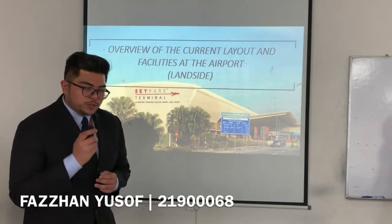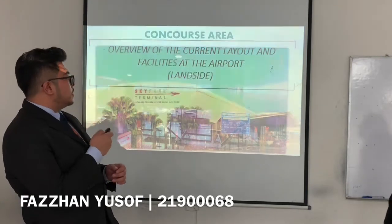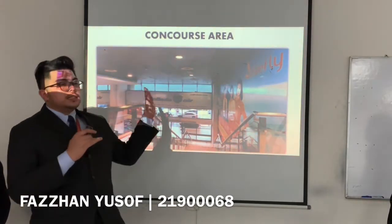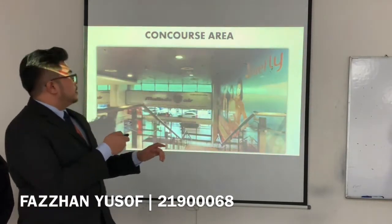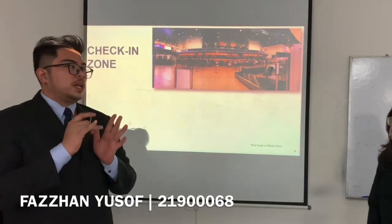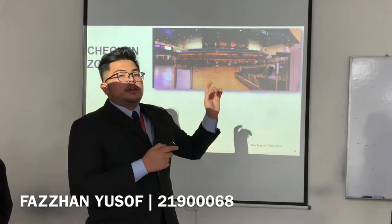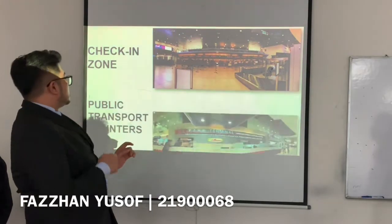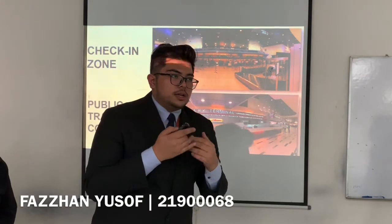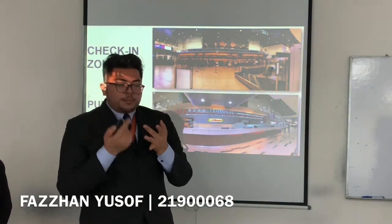Now I am going to explain the overview layout of the airport, starting with the landside. On the landside we have the concourse area and the check-in zone. This is the view of the check-in zone where all the passengers are checking their luggage and tickets. The next area is the public transport counters, where you can find public transport such as taxi, buses, or Grab car.